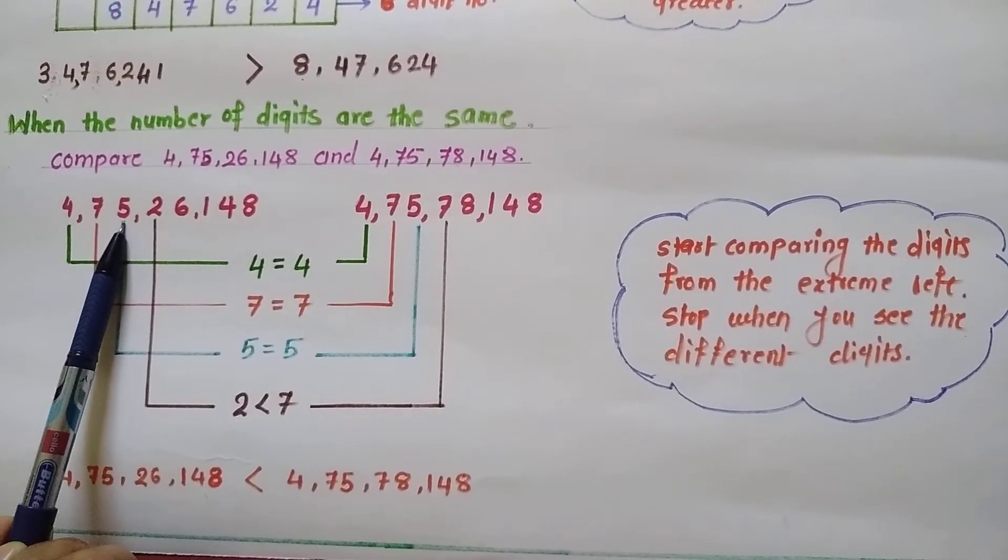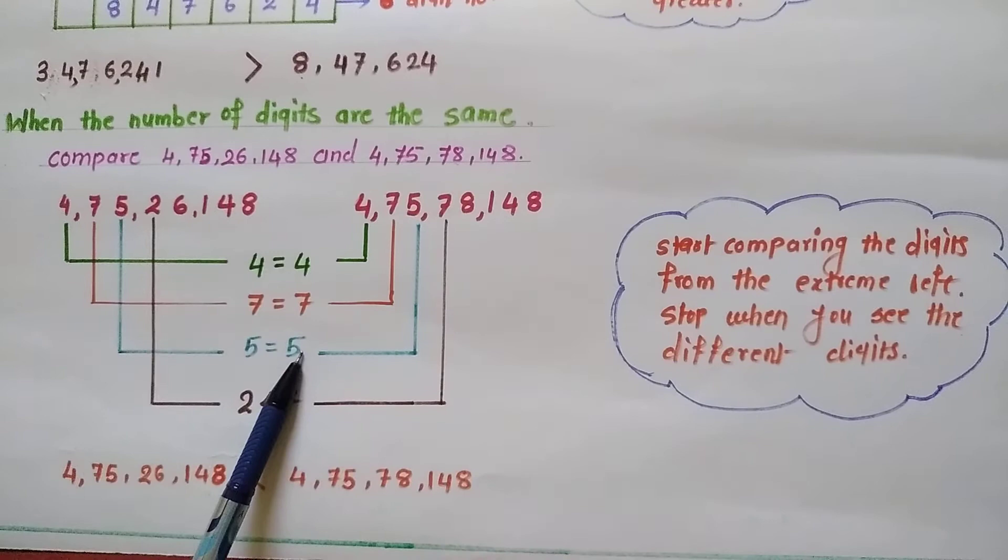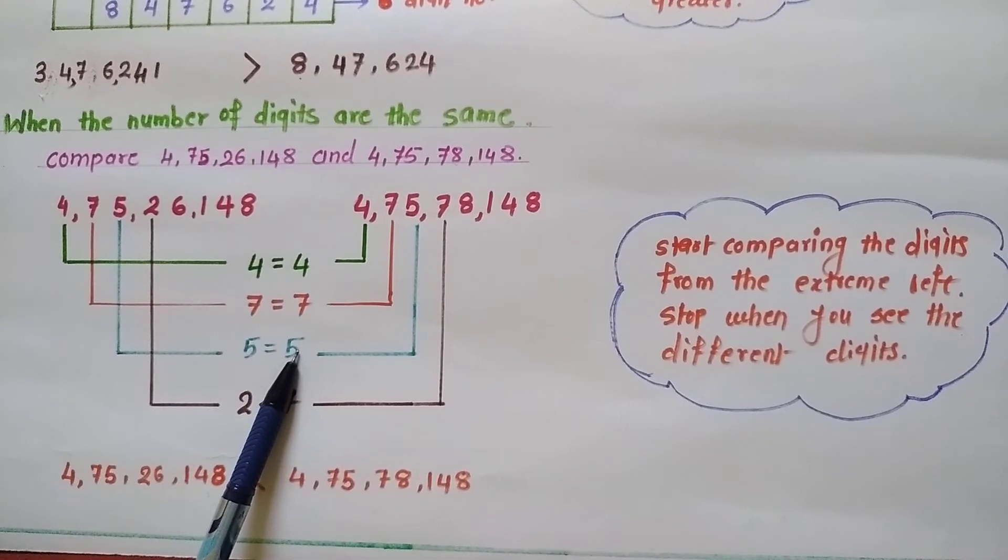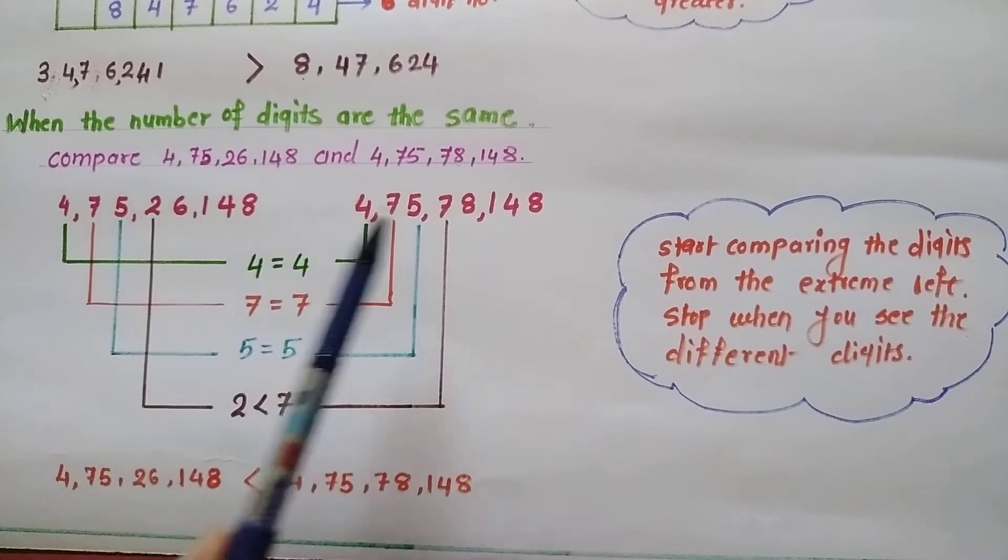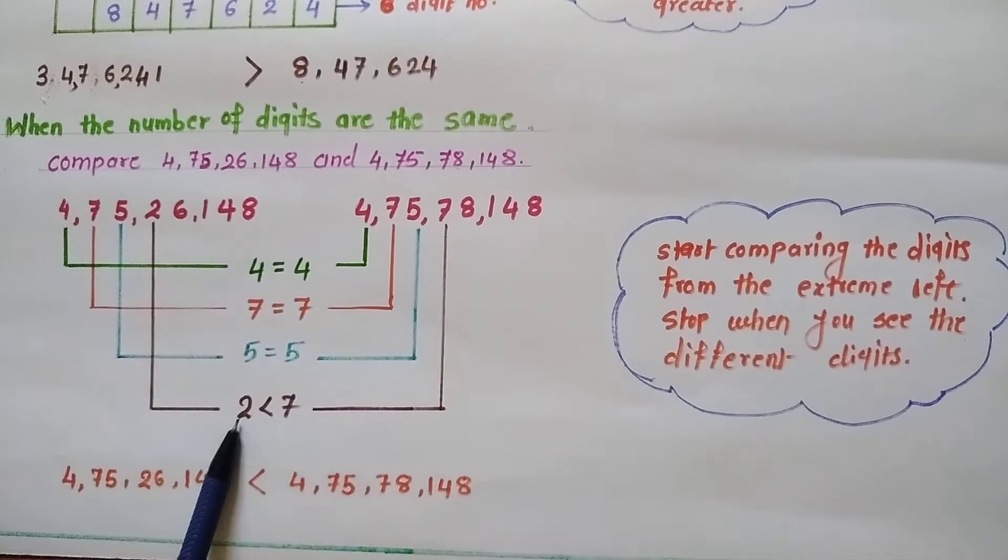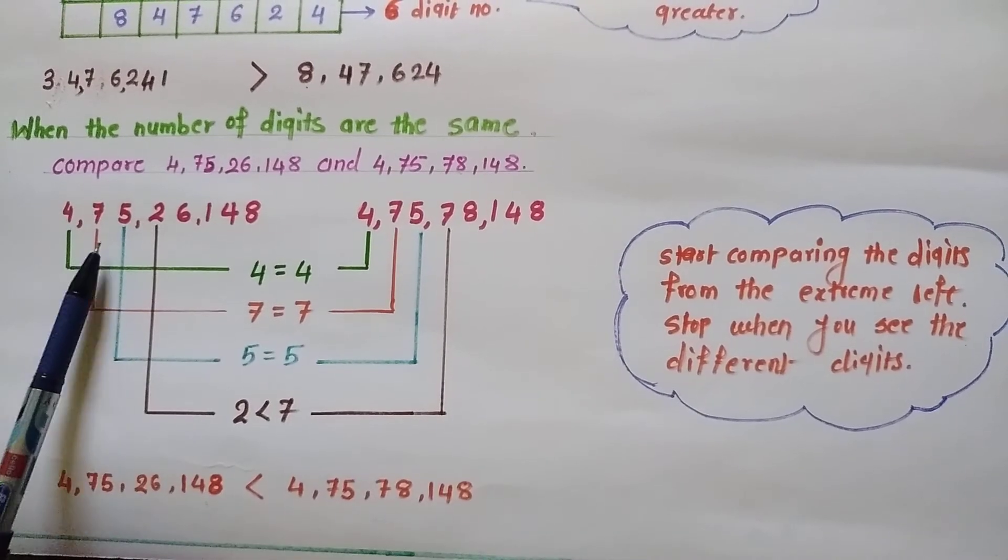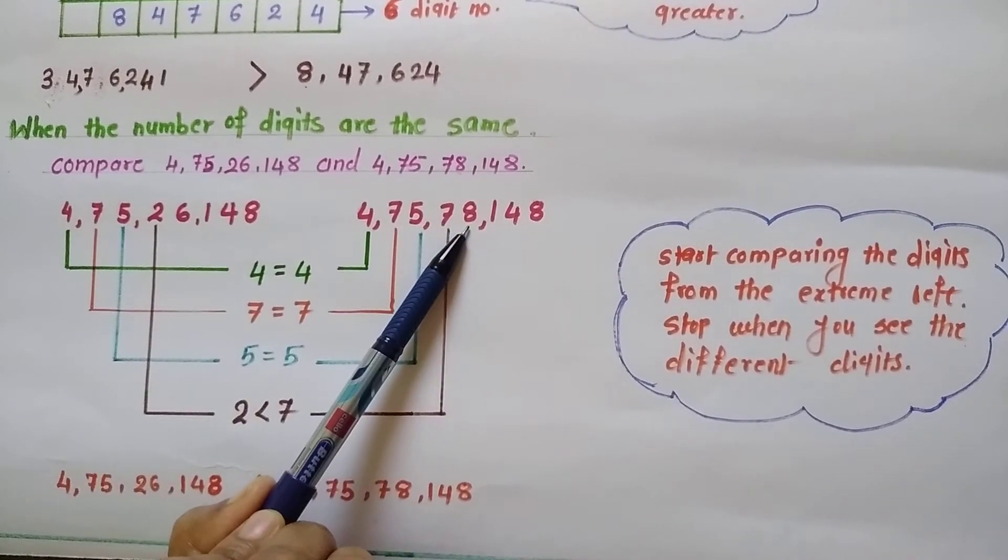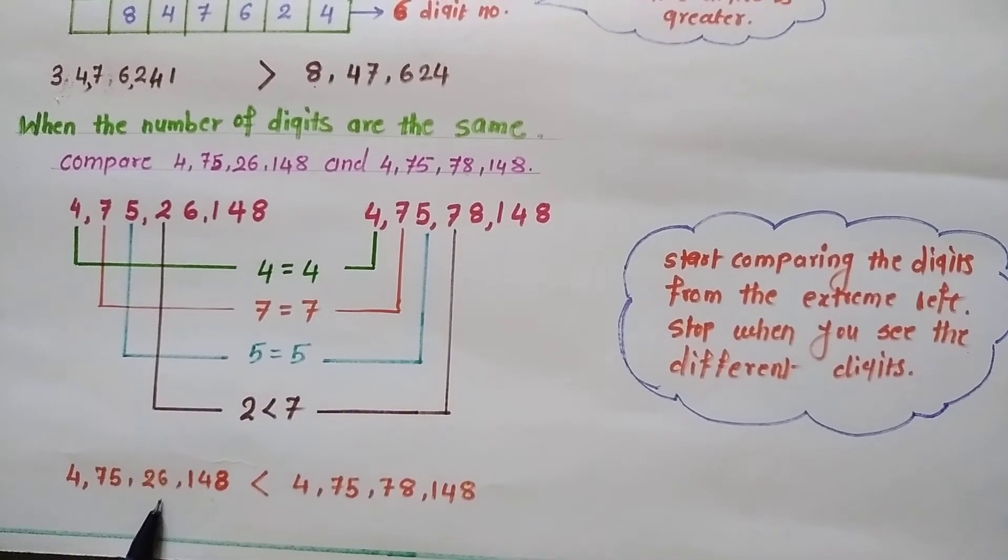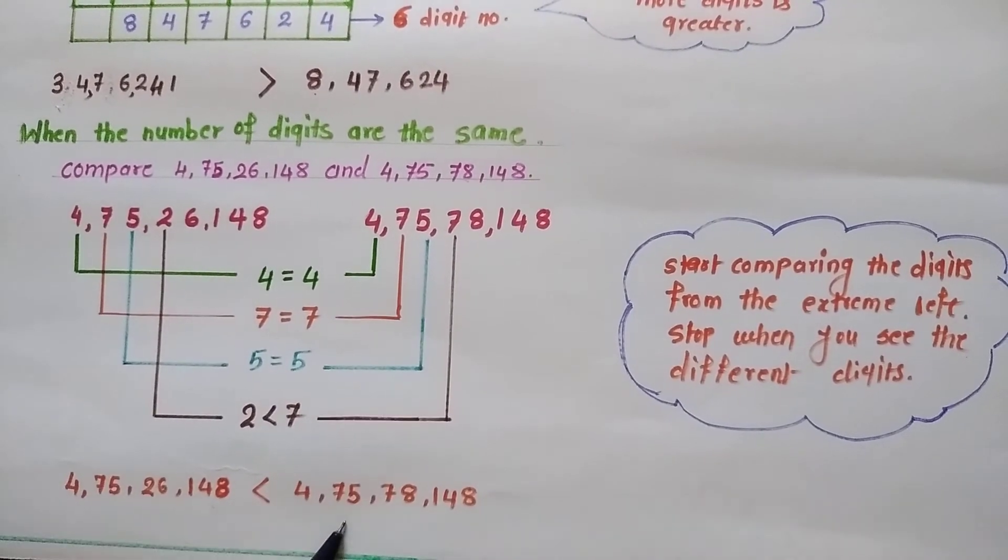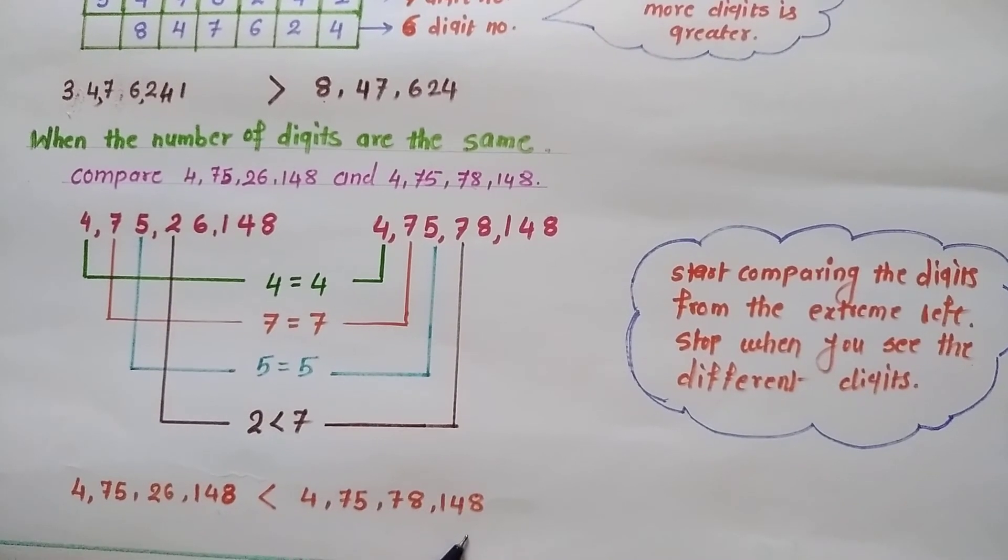Means again both the digits are same. So we need to compare the next digit. Now, the next digit of 5 in the first number is 2, and in the second number is 7. And we all know that 2 is less than 7. It means the left number is obviously less than the right number. Means the number 4,75,26,148 is less than 4,75,78,148.